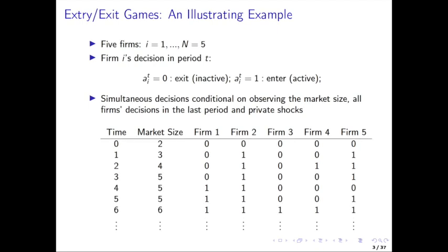One of the things you can see here is that firm two is just making the same choice every period, and once firm one is entering, it's also staying inside the game. It's not like those choices are completely new every period. There's persistence in those choices. In order to really model that persistence, we need a dynamic model where the firms are potentially taking into account entry costs. If there are entry costs, it's going to generate that type of persistence.